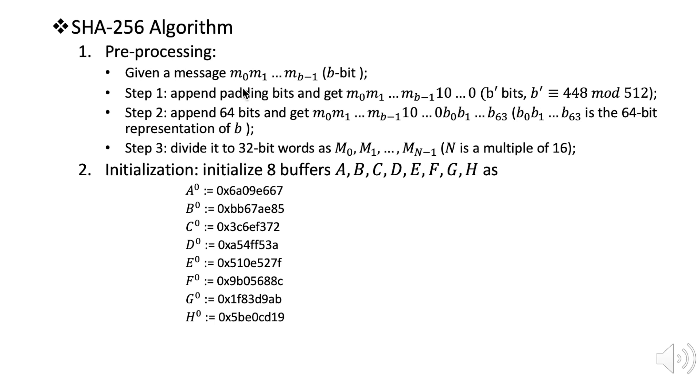Suppose the message has b bits, denoted as m0, m1, until m(b-1). First we're going to patch a bit 1 after it and many zeros after that so that the length of the message becomes b prime.